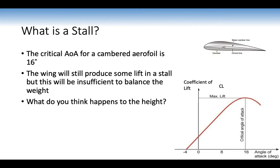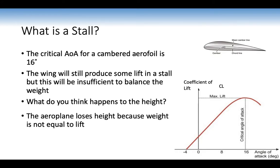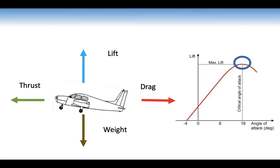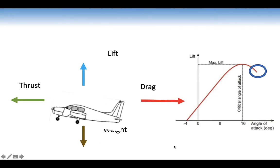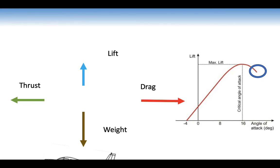The critical angle of attack for a cambered aerofoil is 16 degrees. A cambered aerofoil is very good at producing lift, even at negative angle of attack. The wing will still produce some lift in a stall, but this will be insufficient to balance the weight. Past 16 degrees, some lift is still being produced but not enough to balance the weight — so the aeroplane will lose height because lift is insufficient to balance weight, and there's a lot of drag as well. A sink and loss of height is one of the indications of a stall.